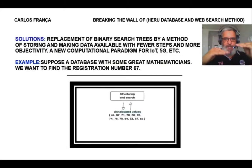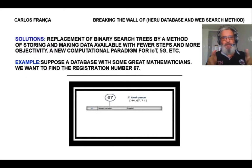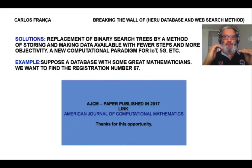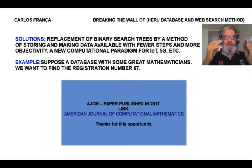The first step: storage. Then create an ideal key and locate the value. Finally, create a secondary ideal key and registration number 67 is found — three steps: storage, locate value, and create ideal key. It's a new paradigm. Binary search tree compares data one by one; my method scans and eliminates useless results.